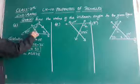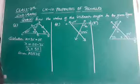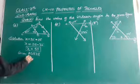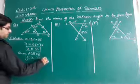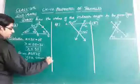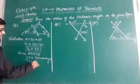This x and this y are the corresponding angles. So, y equal to x, reason is corresponding angles. So, value of y will also be 53.